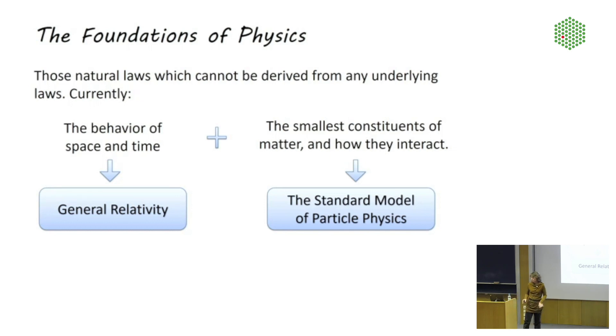So physics is a large field. I'm talking about the foundations of physics, by which I mean those natural laws which, for all we currently know, cannot be derived from any underlying laws. And we currently have two theories in the foundations of physics. The one is the standard model of particle physics that I already mentioned. The standard model contains 25 particles, one of which is the Higgs. Those particles make up all the matter in the universe, and the standard model describes how these particles interact. The other theory that we have in the foundations of physics is Einstein's theory of general relativity, which describes the behavior of space and time.